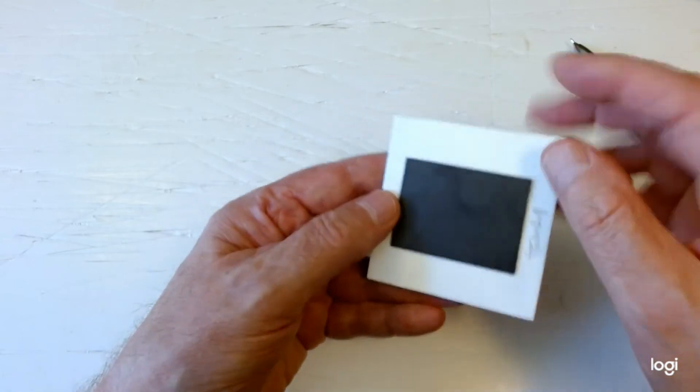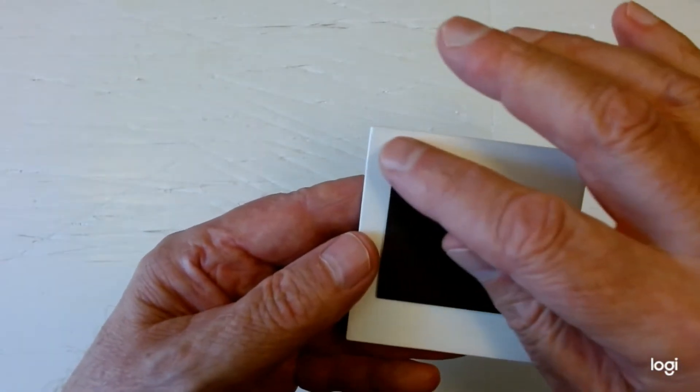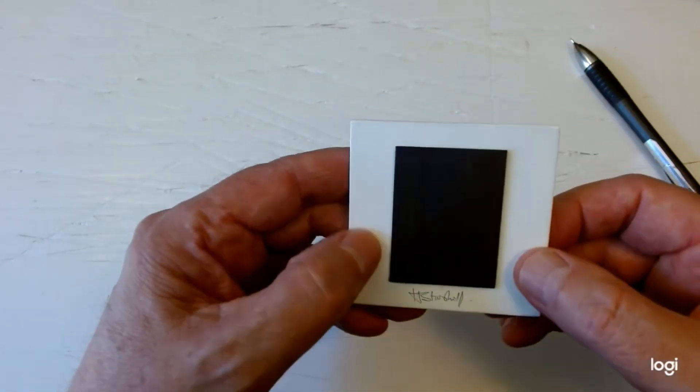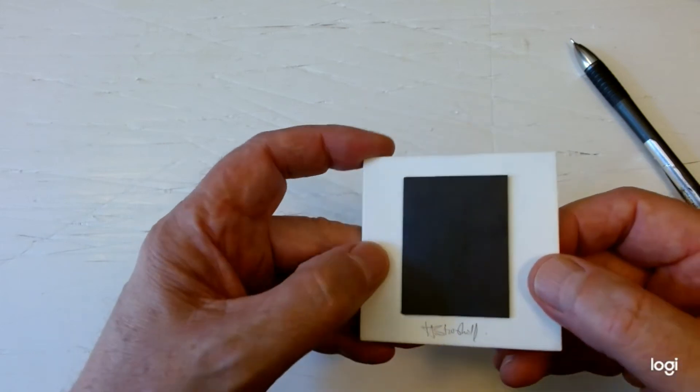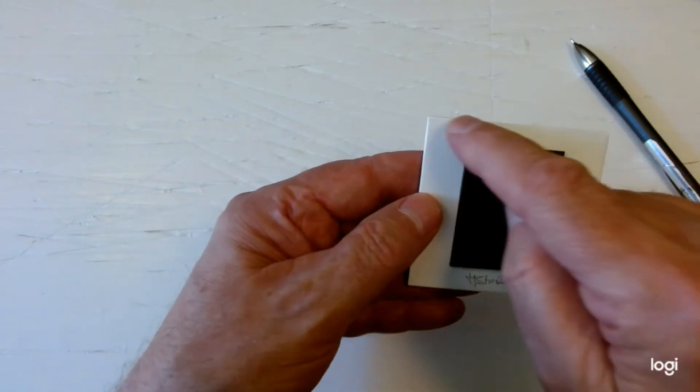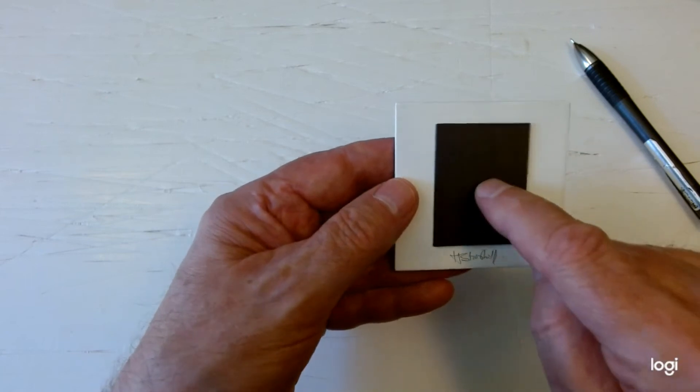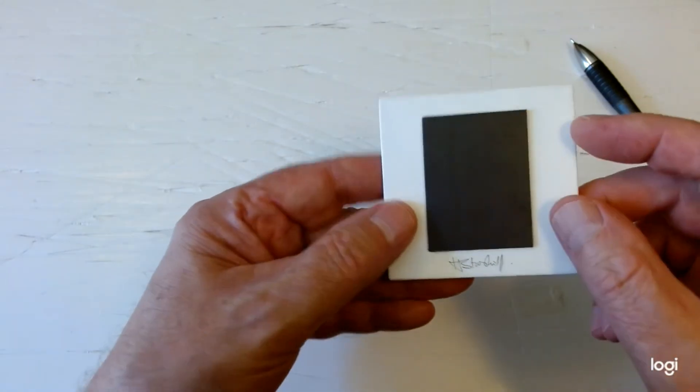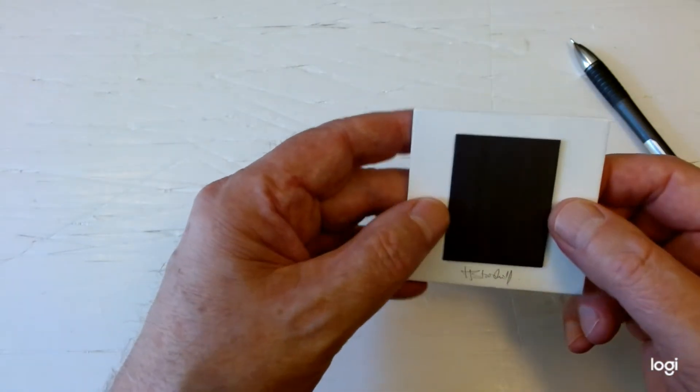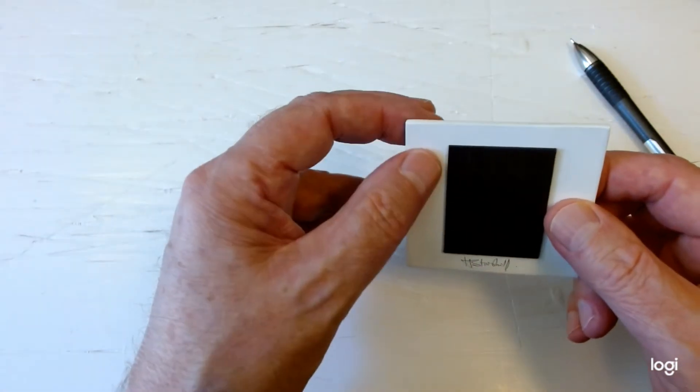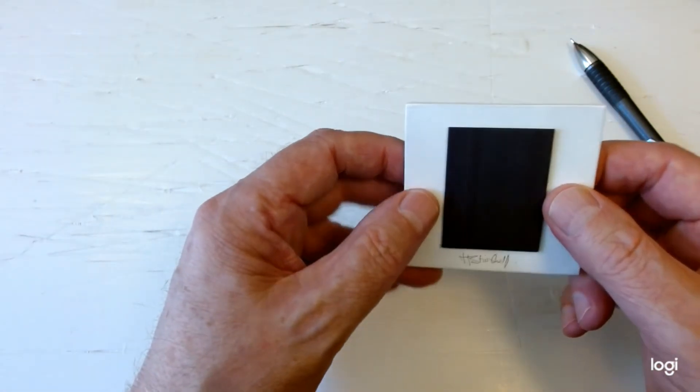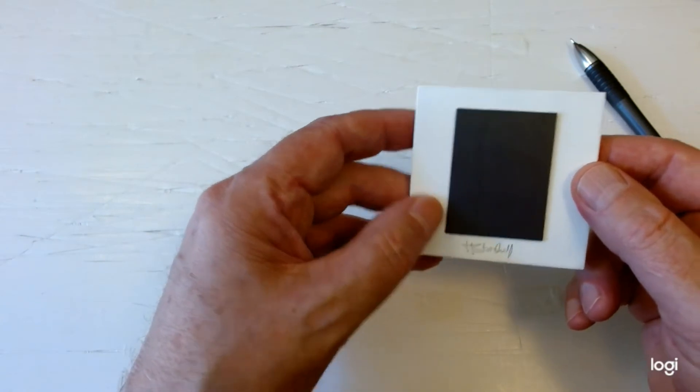You can see what the finish looks like if I pull that a little closer. With actually two to four layers, it'll be four layers around here and two layers in the center. First one layer of that GAK 100 primer that I showed you, then two layers of satin latex white paint.